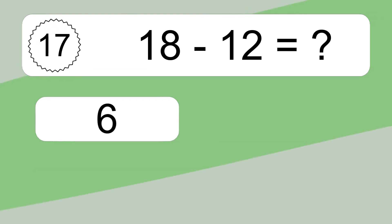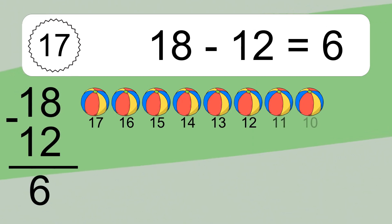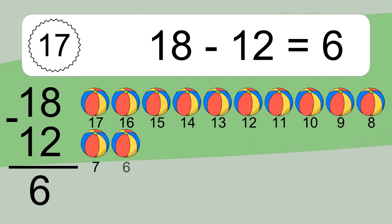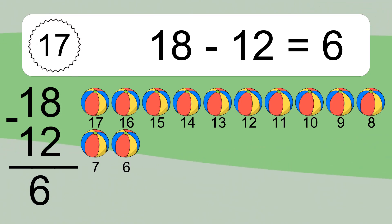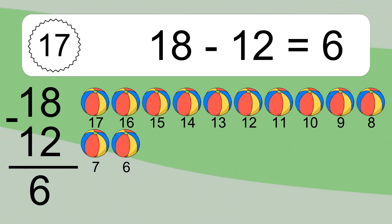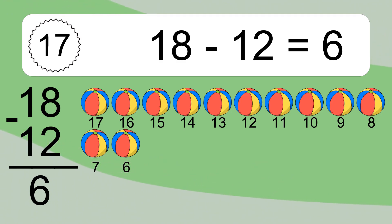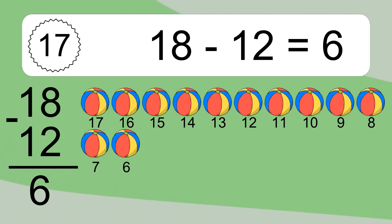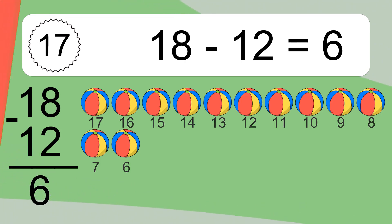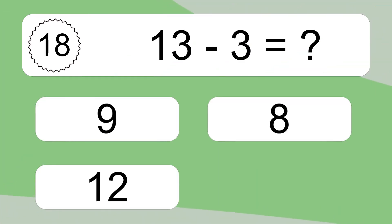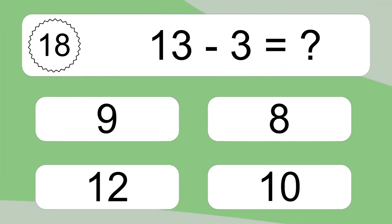18 minus 12 equals what? 18 minus 12 equals 6. Let's count it: 17, 16, 15, 14, 13, 12, 11, 10, 9, 8, 7, 6.